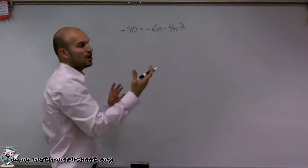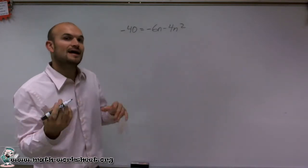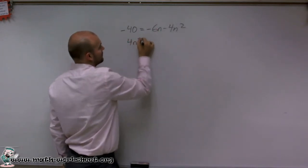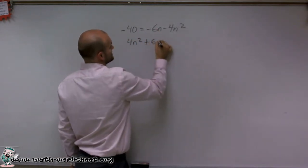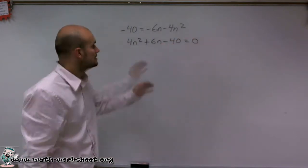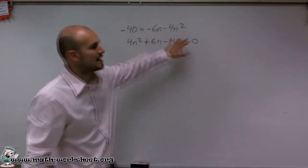So what I'm going to do is get all of my terms on one side and set them equal to 0. By rewriting this, I can have positive 4n squared plus 6n minus 40 equals 0. All I did was I just brought those over to the other side and left 0 on the end.